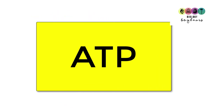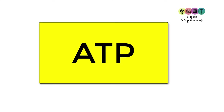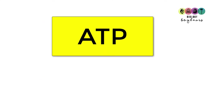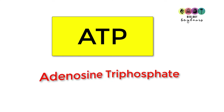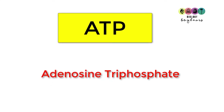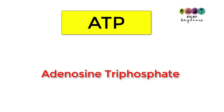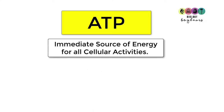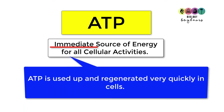This video is about ATP, a molecule that we encounter frequently in respiration and photosynthesis. ATP is called adenosine triphosphate, and it's important that you know the full name. When asked what it does, ATP is an immediate source of energy for all cellular activities, and the word 'immediate' is really important.